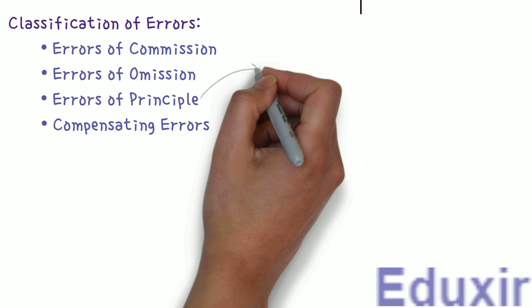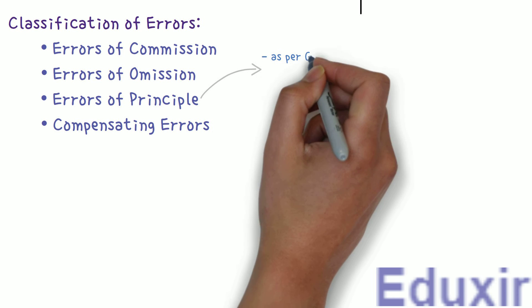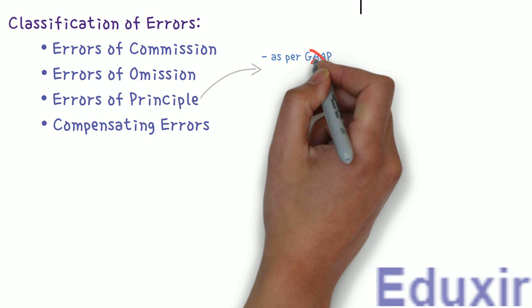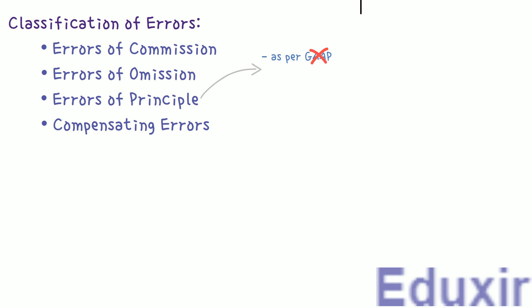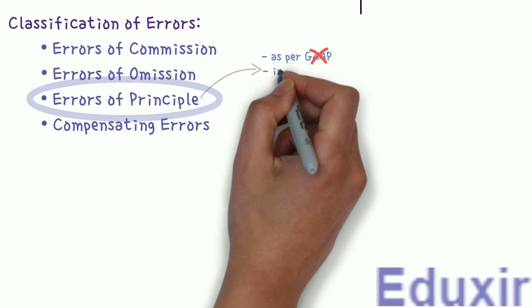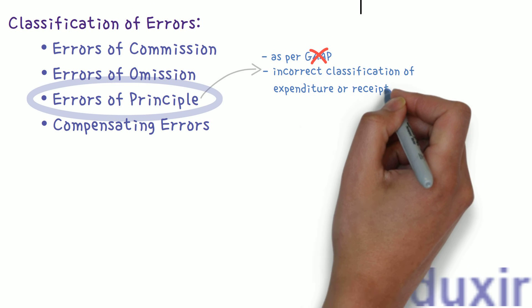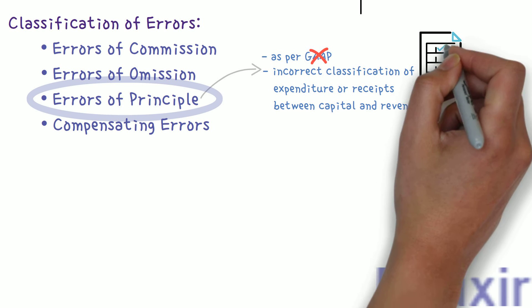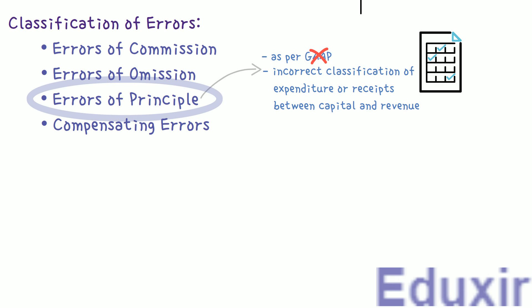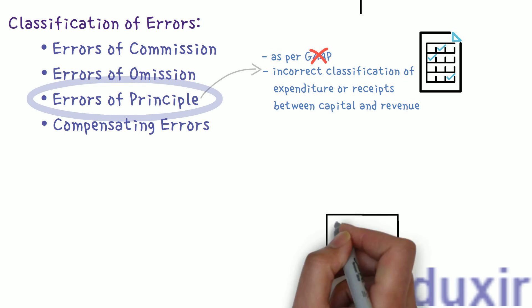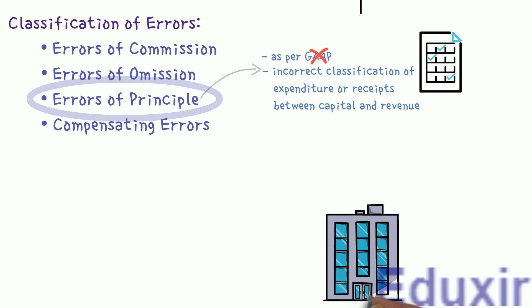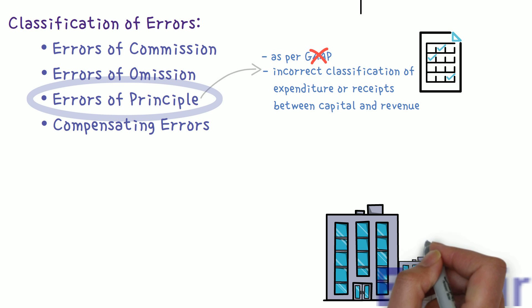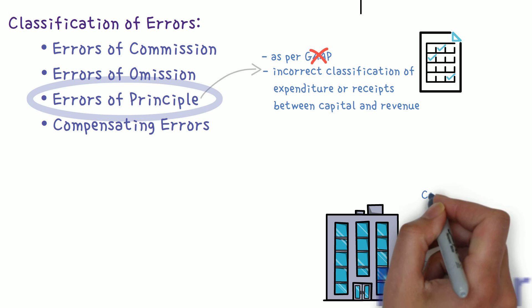As you know, accounting entries should be recorded as per generally accepted accounting principles. When any of these principles are violated or ignored, errors resulting from such violation are known as errors of principle. These errors may also result due to the incorrect classification of expenditure or receipt between capital and revenue. It is very important that these errors be identified and rectified, as they will have an impact on the financial statements.